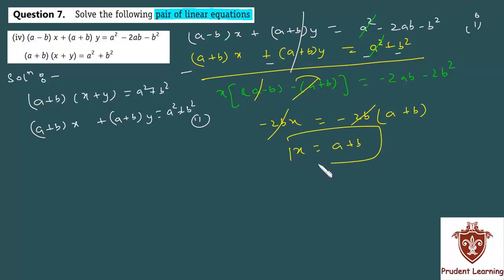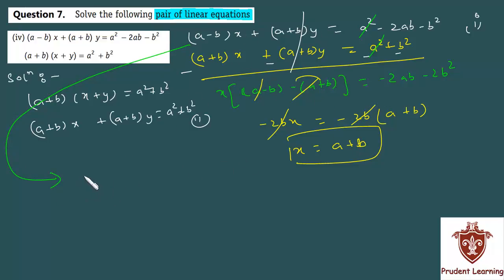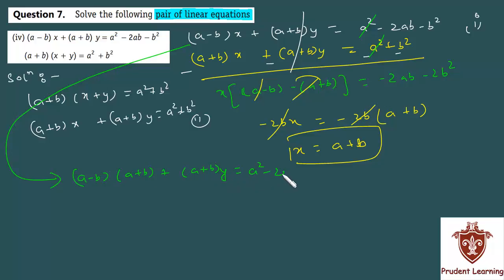Now that we have x equal to a plus b, we substitute this value into any equation to find y. Substituting x equal to a plus b in equation 1, we have: (a minus b) into (a plus b) plus (a plus b) into y is equal to a squared minus 2ab minus b squared.